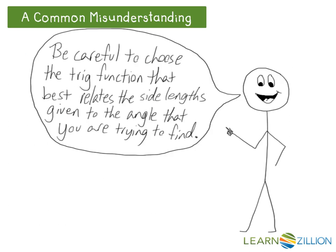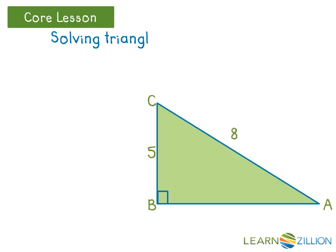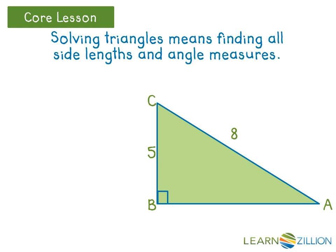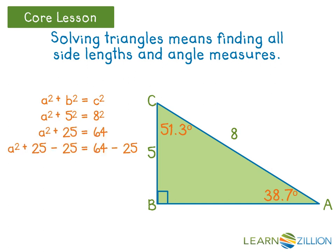Be careful to choose the trig function that best relates the side lengths given to the angle that you're trying to find. Solving a triangle means finding all the side lengths and angle measures for the given triangle. Since we know that we have a right angle and an angle measure of 38.7 degrees, the remaining angle measure must be 51.3 degrees. Using the Pythagorean theorem, we can find the remaining side length as well — in this case, approximately 6.2 units long.